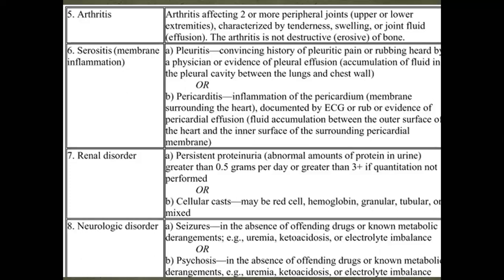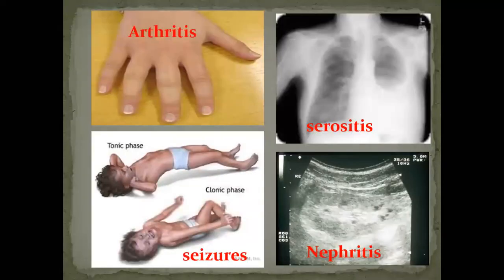Renal affection clinically presents with resistant proteinuria or the presence of casts in urine. Neurologic affection can be neuropsychiatric — in the form of seizures, or psychiatric in the form of psychosis. These complete the organ-based criteria. That brings us to eight criteria covered so far.